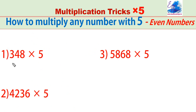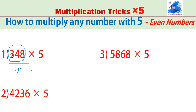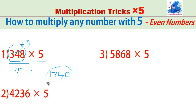See a few more examples. 348 into 5. First make it half — divide this number by 2: we get 174. And put 0 at the end. 1740 is the answer.